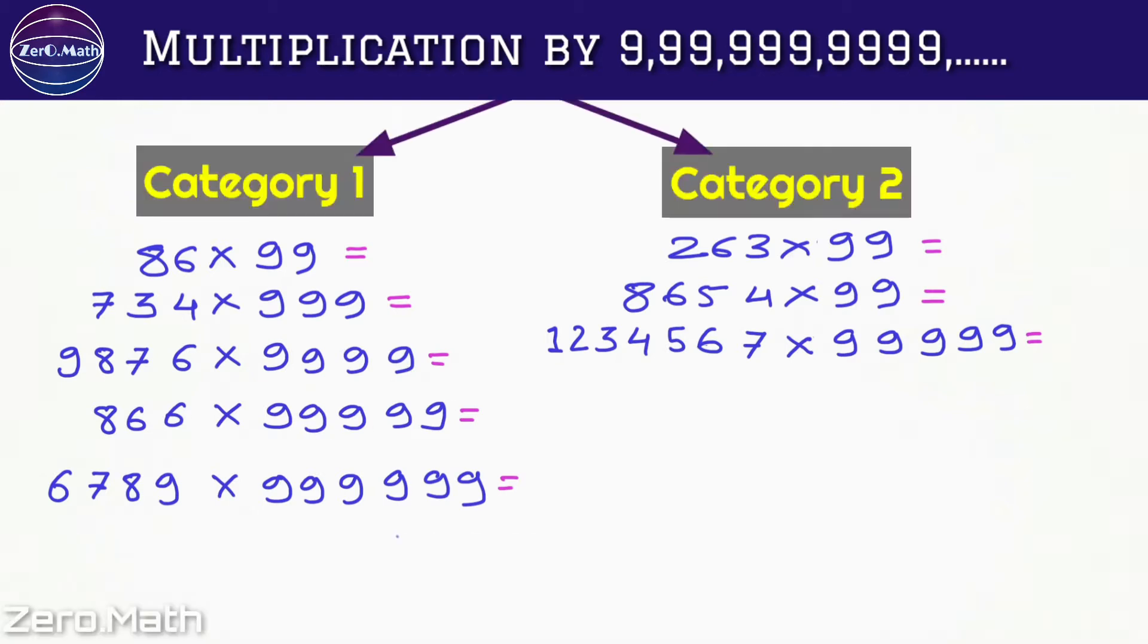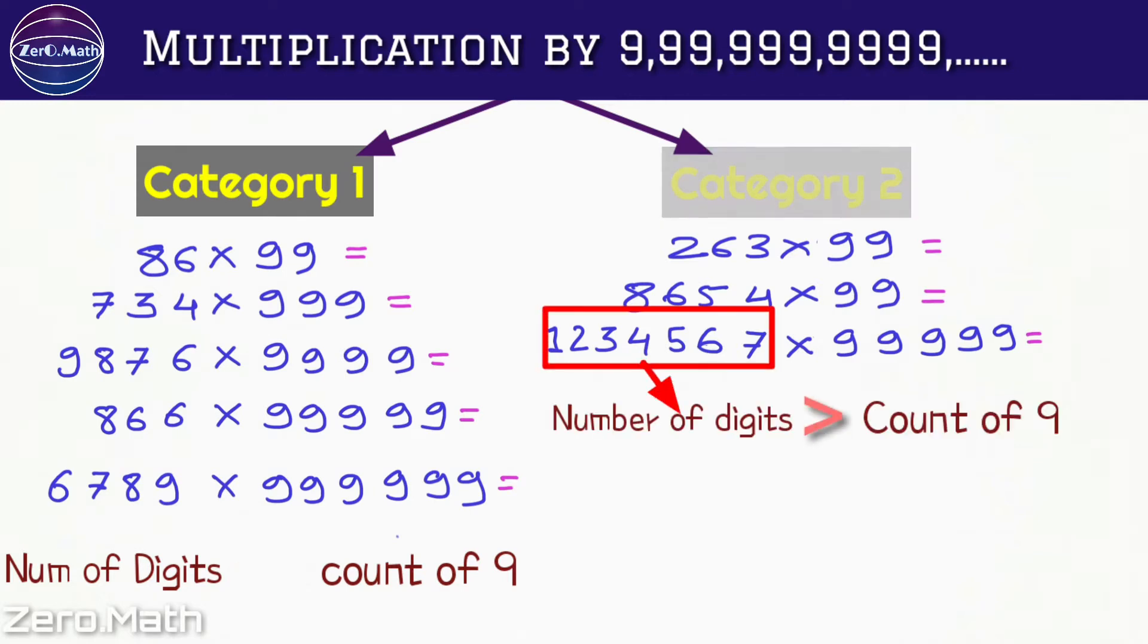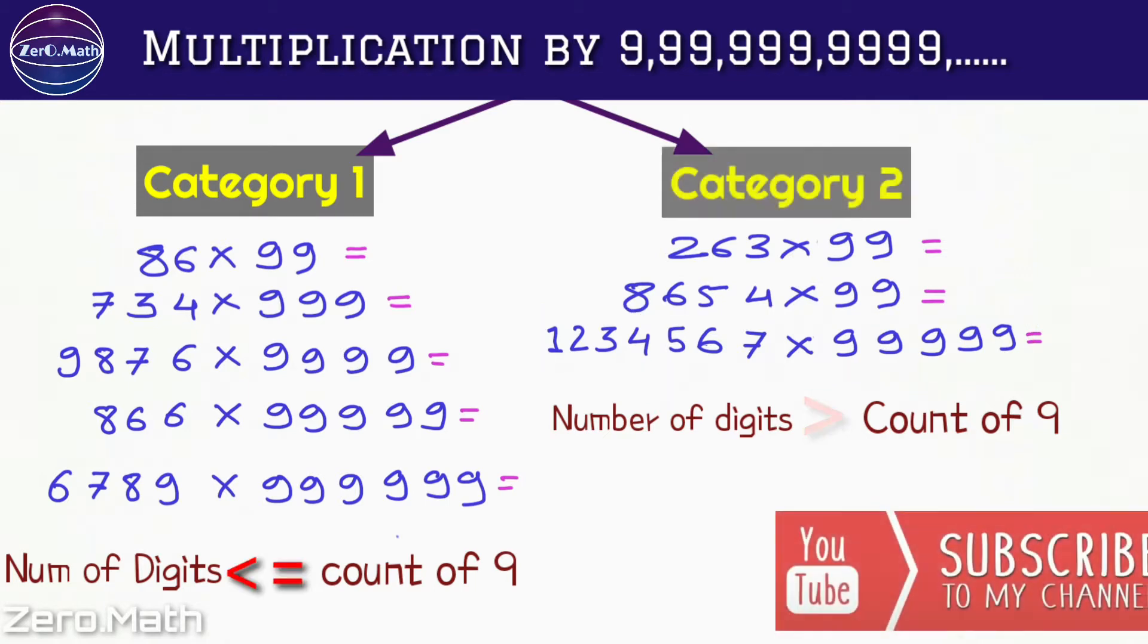You can see on screen that I've taken a few examples which are divided into two categories. Category 1 is where the number of digits in the number we are multiplying are same or less than count of 9 in the 9 series number. Category 2 is where the number of digits are more than count of 9 in the 9 series number.